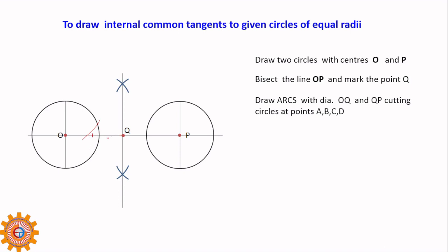It is good practice to use arcs to find the center of this line. Using that center, draw the arc — this will cut the circle at two points. The same arc is used to cut the other circle. These are points A and B. If you join A and B, you get an internal tangent between the circles. You can also use the same arc for CD to get another tangent.